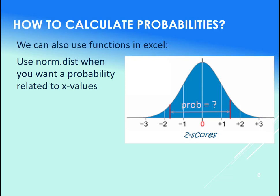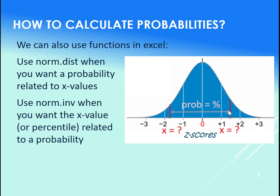If we wanted the probability between two different x values, you would use the norm.dist. We'll talk more about that later.